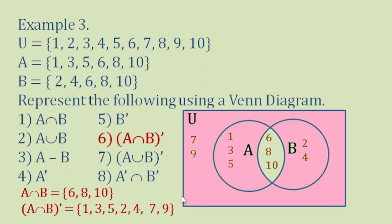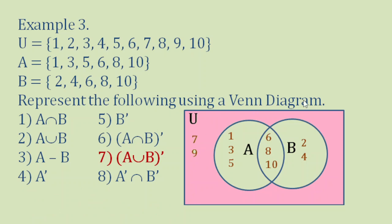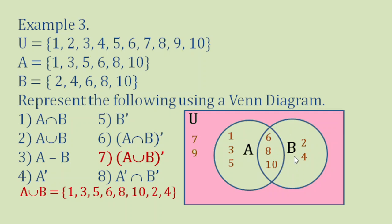Number 7: A union B prime. A union B includes everything inside the two circles — 1, 3, 5, 6, 8, 10, 2, 4. But A union B prime means not that region, so we look at the elements outside the circles.